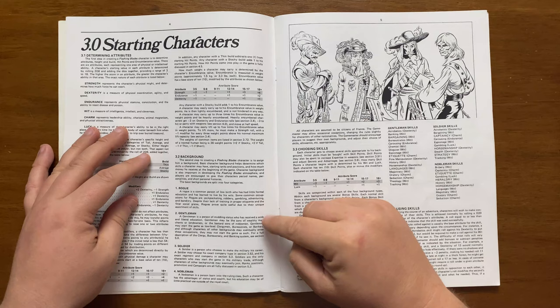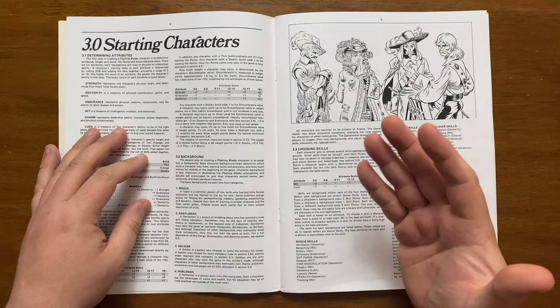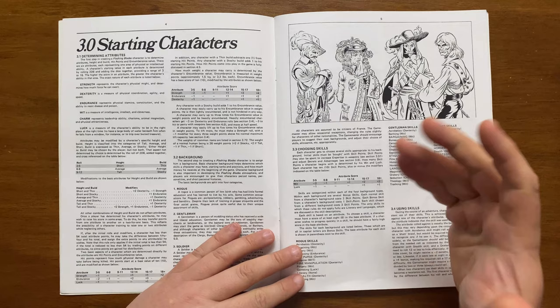After this, we move on to backgrounds. In Flashing Blades there are 4 basic ones: Rogue, a person of low birth with a unique skillset; Gentleman, a person of middling status who could be in the clergy, a bureaucrat or a banker; Soldier, a person with military training; and Nobleman, a person born into wealth and all the advantages that brings.